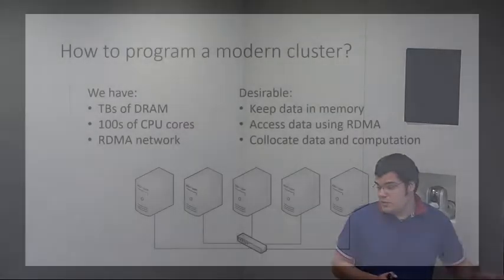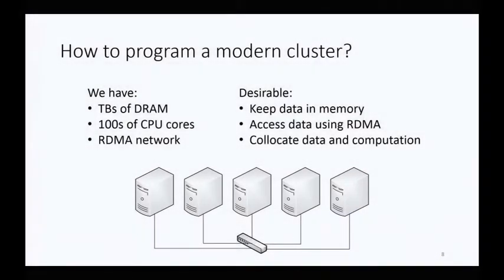When starting this project, we asked ourselves how to program a modern cluster — a cluster of terabytes of DRAM, hundreds of CPU cores, and an RDMA network. In this work, our small cluster of 20 machines already has 2.5 terabytes of DRAM, 320 CPU cores, and a 40 gigabit network that supports both Ethernet and RDMA. We would like to keep the data in main memory and access it using RDMA as much as possible because this gives us significant performance improvements.